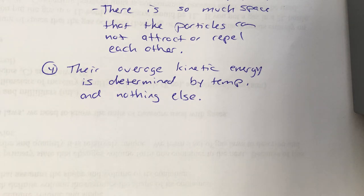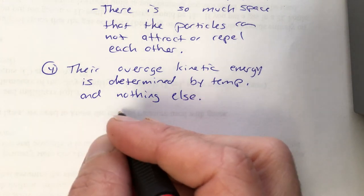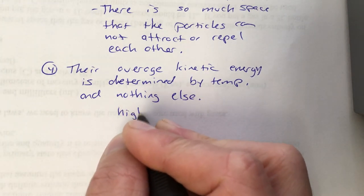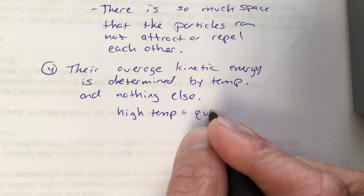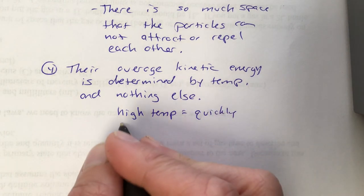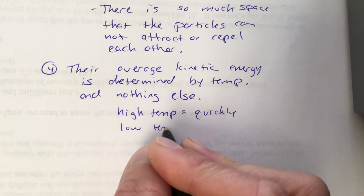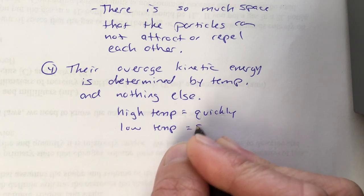The volume, the amount of space they have to move around in, doesn't affect it. The only thing that affects how fast a gas particle moves is the temperature of that gas. When temperatures are high, they will move quickly. When temperature is low, they move slowly.